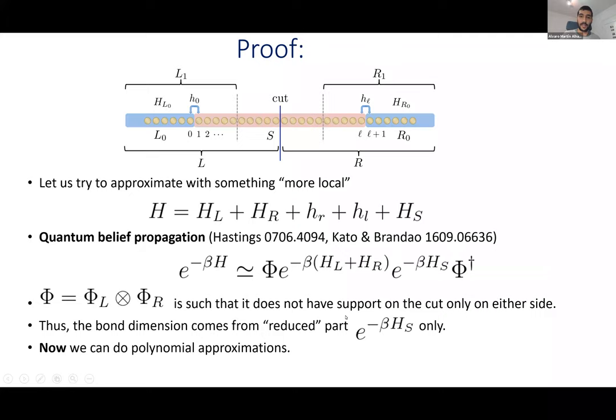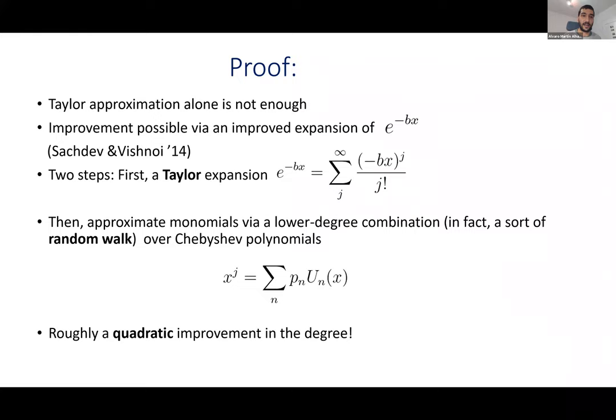The nice thing about this decomposition is that now we can do a better polynomial approximation — we only have to approximate this small local part, not the whole Hamiltonian. The size of this local part comes out of the proof. Now for the polynomial approximation: a simple Taylor expansion turns out not to be enough. You need to go to the computer science literature, where there's great interest in polynomial approximations — in particular the best polynomial approximation of the exponential function.